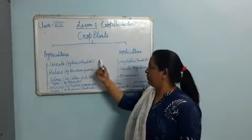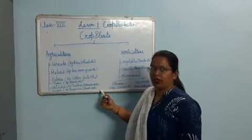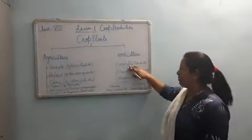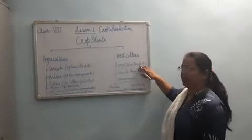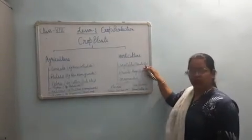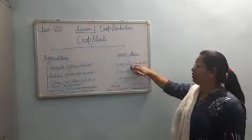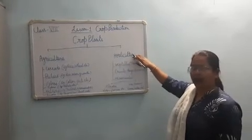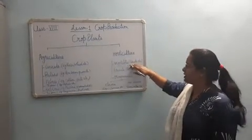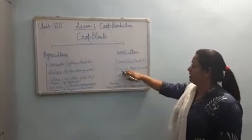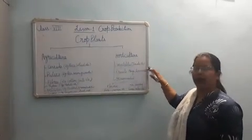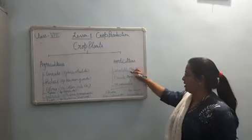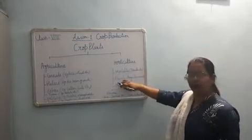So these are the different agricultural crops. Now we are coming to horticulture. Vegetables like tomato, cabbage, spinach — they are grown on a large scale under horticulture. Next are fruits: mango, banana, grapes — they are domestically cultivated just to get the fruit product.